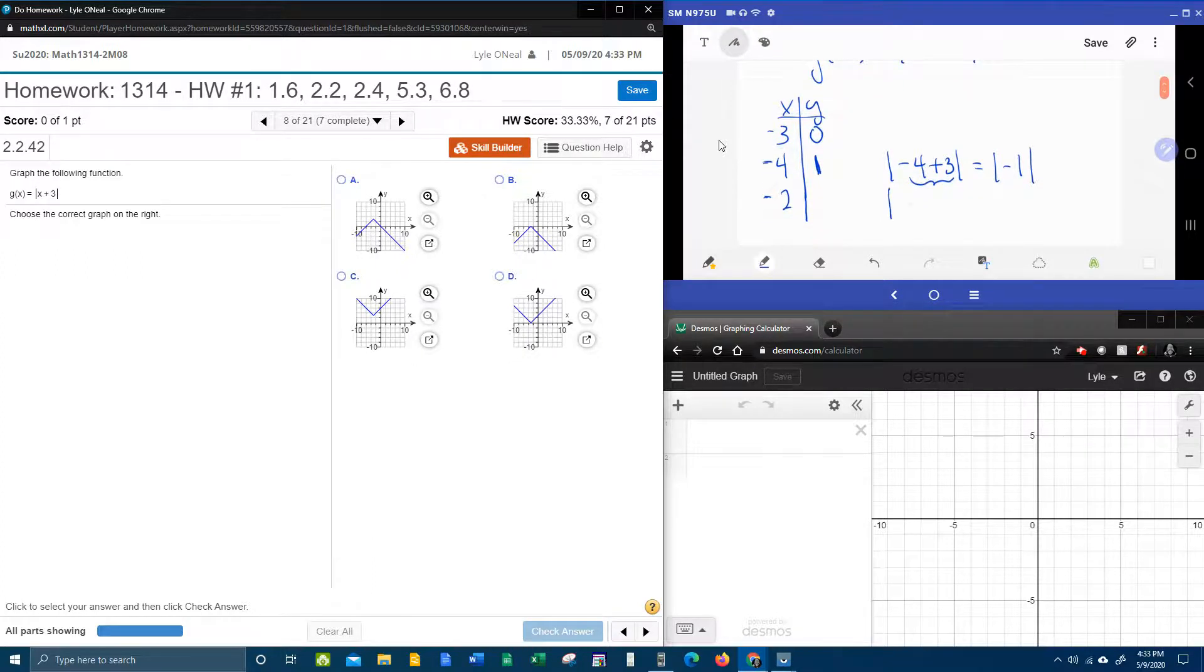Next, we're going to do negative two plugged in for X. Again, doing the order of operations, negative two plus three is positive one, and the absolute value of one is one. And so it's no surprise that those values are the same, since we went equidistant from the vertex.